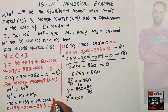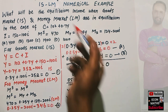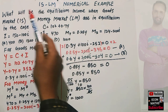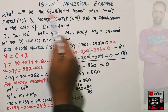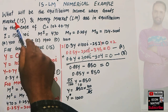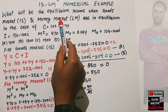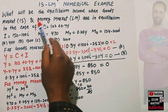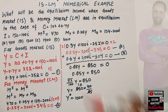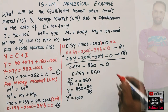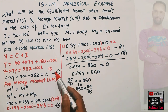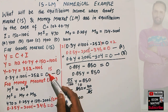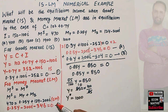We equated the IS and LM equations because the question asks for the equilibrium income when both the goods market and money market are simultaneously in equilibrium. The IS equation represents the goods market and the LM equation represents the money market.